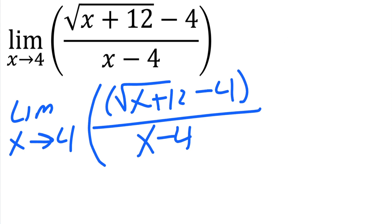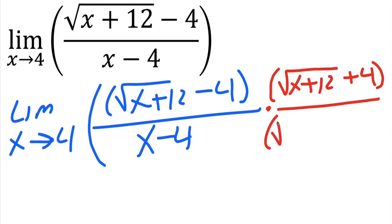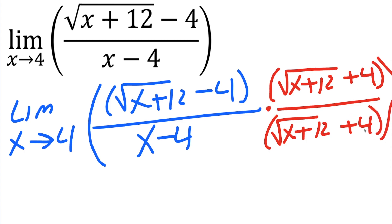For this problem, we're going to multiply by the conjugate. That's going to be this piece, but instead of a subtraction, we change it to addition. So we'll have the square root of x plus 12 plus 4 in parentheses. And since we put it in the numerator, we also have to put it in the denominator — the same thing: the square root of x plus 12 plus 4, in parentheses.